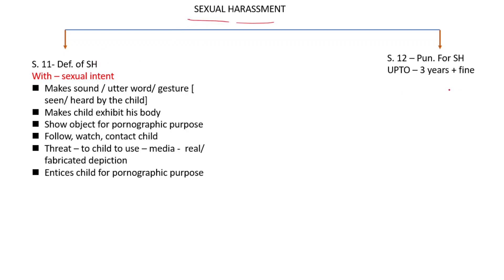In section 11 and section 12, our last two sections of this segment — sexual intent is always necessary to convict. Section 11 covers sexual harassment: making a sound, uttering a word, gesture, or action seen or heard by the child; making the child exhibit his body; showing an object for pornographic purposes; following, watching, or contacting the child; threatening the child using real or fabricated media depictions; and enticing the child for pornographic purposes. All these constitute sexual harassment.